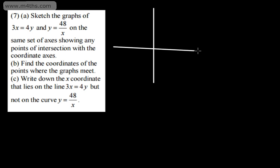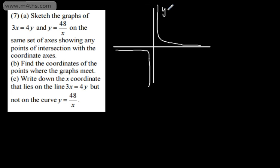In question 7, part a asks us to sketch graphs of 3x equals 4y and y equals 48 over x on the same set of axes, showing any points of intersection with the coordinate axes. So what we've got here now is a reciprocal function: y is equal to 48 over x. So what we're going to have is something that looks like that — a curve in the first and third quadrants. That's y equals 48 over x. We could also write 3x equals 4y as y equals 3 over 4 times x. That's going to be a line that goes through the origin with a gradient of 3 quarters.